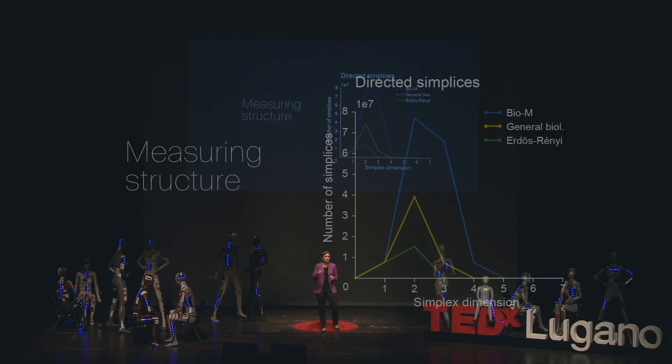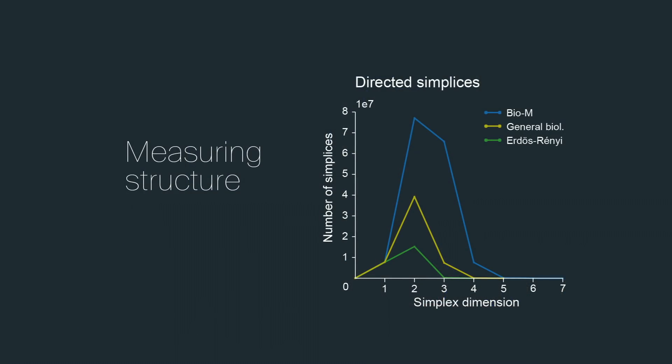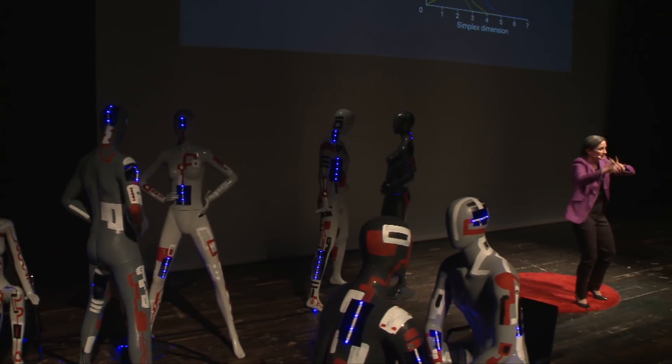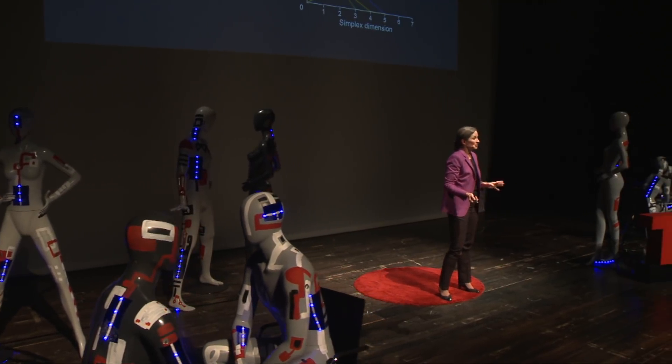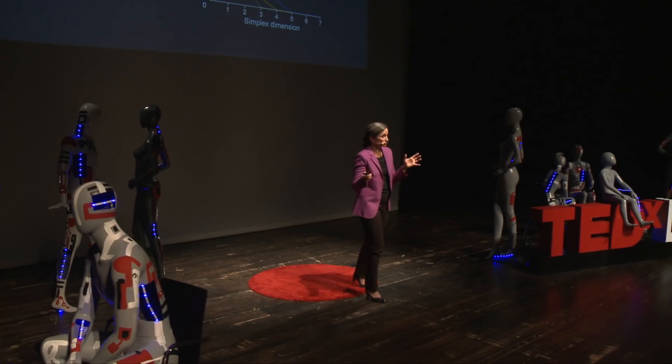How many of these structures are there in the microcircuit we built, and are there more than you would see in a random circuit? The answer is yes. Looking at the blue curve in the graph, it tells us the number of simplices of different dimensions in the Blue Brain microcircuit — tens of millions of two- and three-dimensional simplices, millions of four-dimensional simplices, and there are actually lots of five-, six-, and seven-dimensional simplices, meaning up to eight neurons all working together to amplify and send a signal. When compared to the green curve — a randomly connected network — the biological circuit is far more complex. Biology gives us that complexity, which is necessary for the brain to function properly.